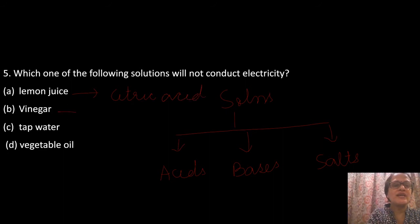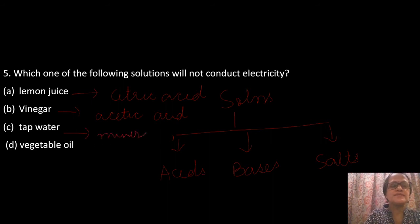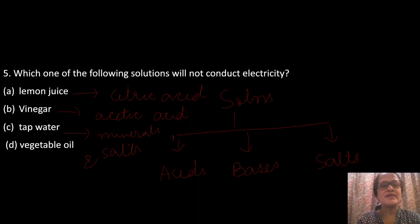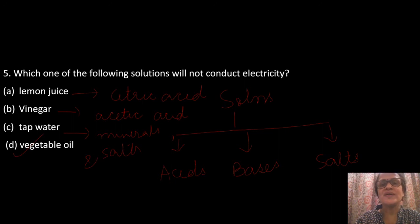Tap water contains dissolved minerals and salts, which make it a conductor, so it will also conduct electricity. The fourth option, vegetable oil, is the correct answer — it does not consist of acids, bases, or salts, so vegetable oil will not conduct electricity.